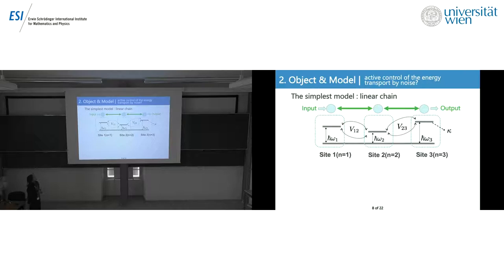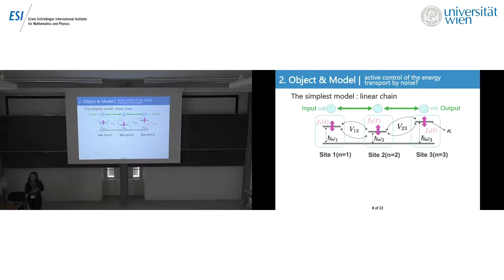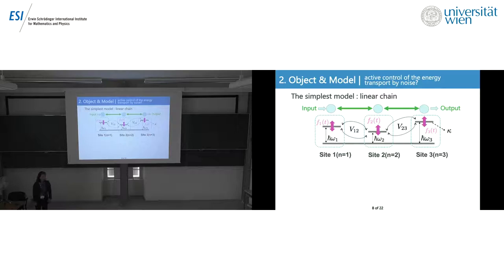We consider a three-site model where the excitation energy differs at each site, and there is a nearest-neighbor interaction between sites. We have a terminal with a trap, and the decay rate is kappa. We consider applying noise to the excitation level. If the noise decreases the energy difference between sites, the transition becomes easier and the noise can accelerate energy transport.